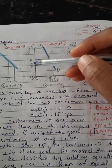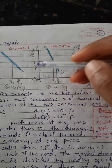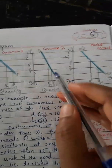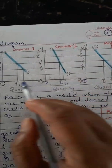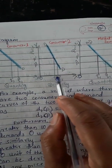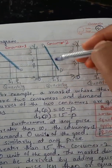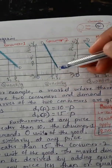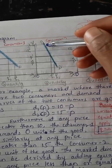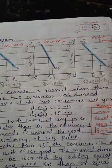Now we look at consumer two. We assume P-cap is 10 rupees and P1 is 15 rupees. When the price increases, consumer two purchases less quantity. The curve shows less quantity at higher prices. The demand curve slopes downward from left to right. This is the demand curve of consumer two.